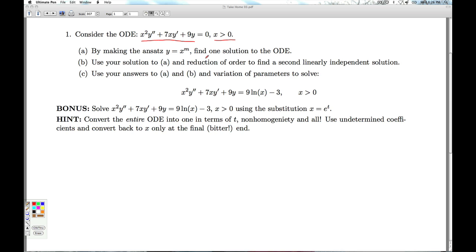So unlike constant coefficient DiffieQs, when we make the assumption y equals e to the mx, we're going to make the assumption y equals x to the m. Every time we take a derivative of a function like this, we're going to be losing a power of x. And what we notice is that we're multiplying the second derivative by x squared. So the two powers of x we would lose to the second derivative, we're getting back. And so that's what's going on here. And that's what tells us that this might not be a bad thing to try.